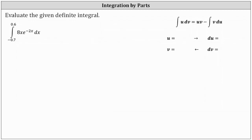We need to evaluate the given definite integral using integration by parts. Notice U-substitution is not going to work here because if we let u equal negative 2x, du is equal to negative 2dx, and we have this extra factor of x in the integrand function. So we will have to perform integration by parts.